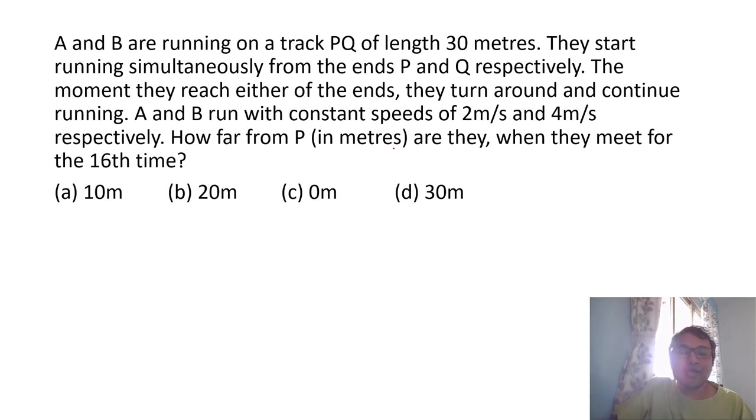A and B are running on a track PQ of length 30 meters. We'll draw PQ of length 30 meters. They start running simultaneously from the ends P and Q. The moment they reach either ends they turn around. At a speed of two meters per second. So let's start with A running and B running. So when A reaches this point Q, when A reaches Q, B has already run from P and come back to Q. So they will meet first time when they meet first time and B is going on this side and A is going on this side. That's the first time they meet.